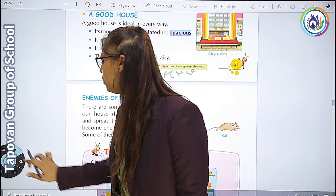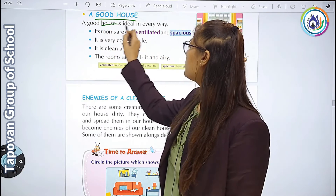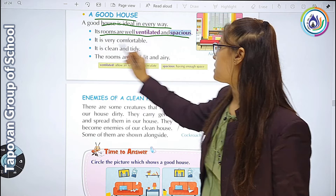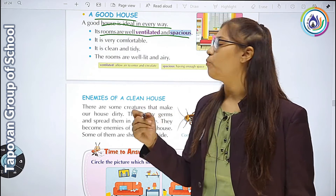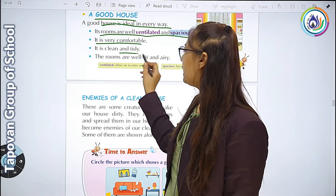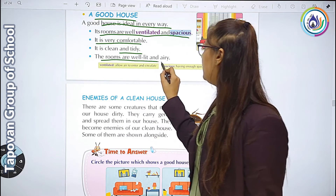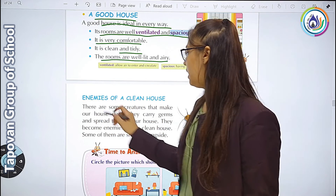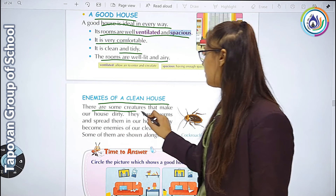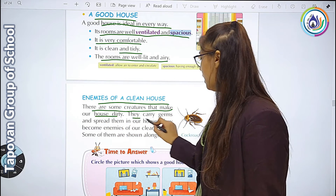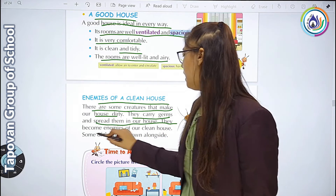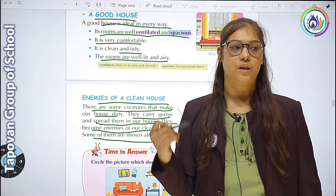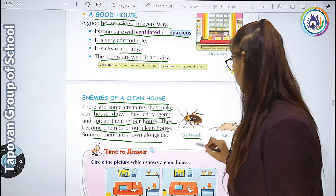Good house - A good house is ideal in every way. Its rooms are well ventilated and spacious. Very comfortable, clean and tidy होते हैं. The rooms are well lit and airy - बहुत अच्छी हवा आती है. Enemies of the house - there are some creatures that make the house dirty. They carry germs and spread them in the house - जैसे cockroaches.